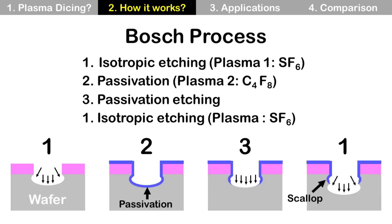For more details, the Bosch process is a three-step process and it repeats as much as you want, depending on wafer thickness. Step 1 is isotropic etching using plasma 1. Step 2 is passivation using plasma 2, C4F8. Step 3 is passivation etching. And these three steps repeat as a cycle, then make scallops on the sidewall.